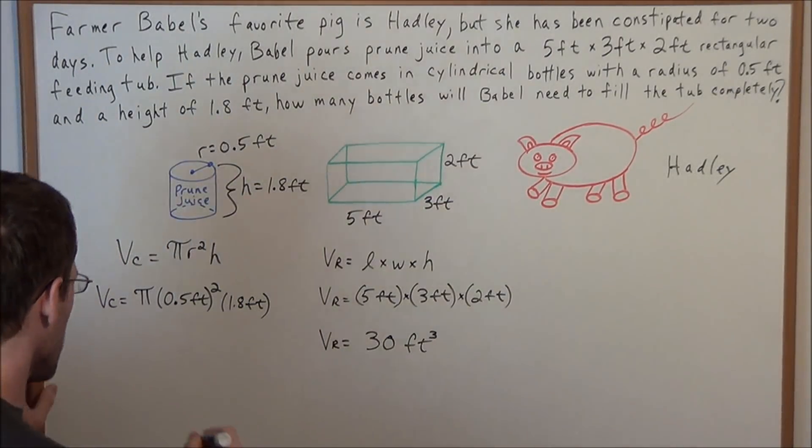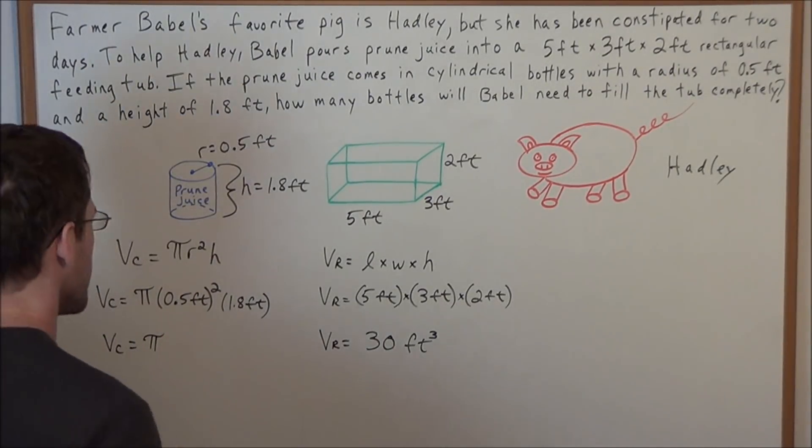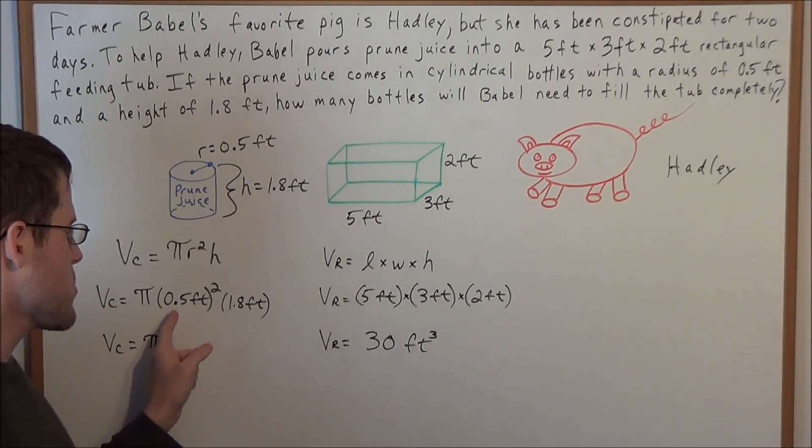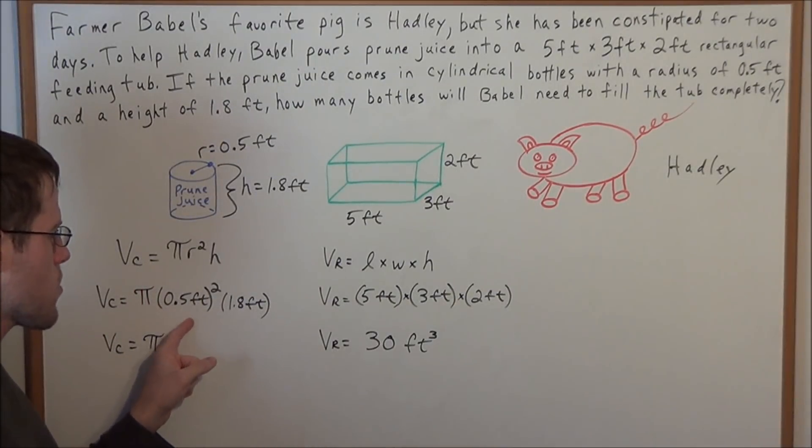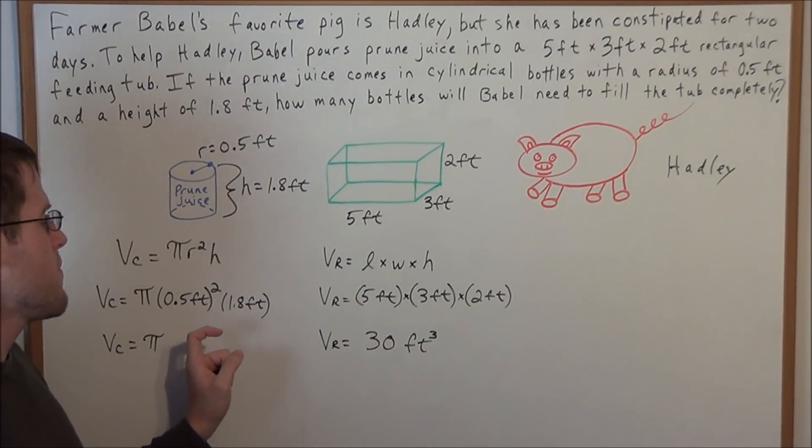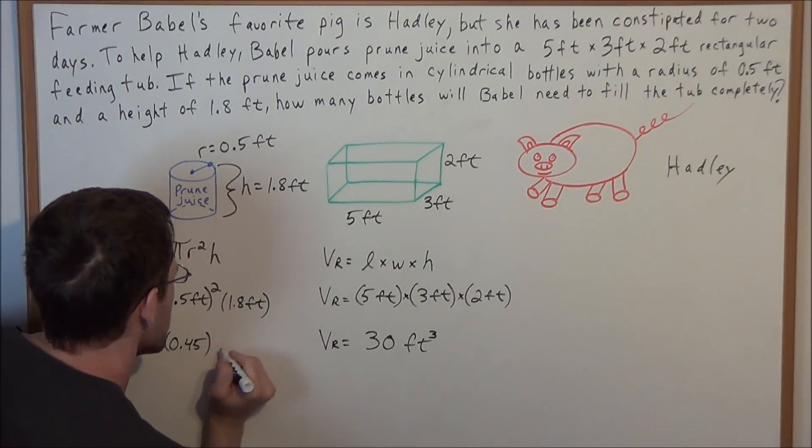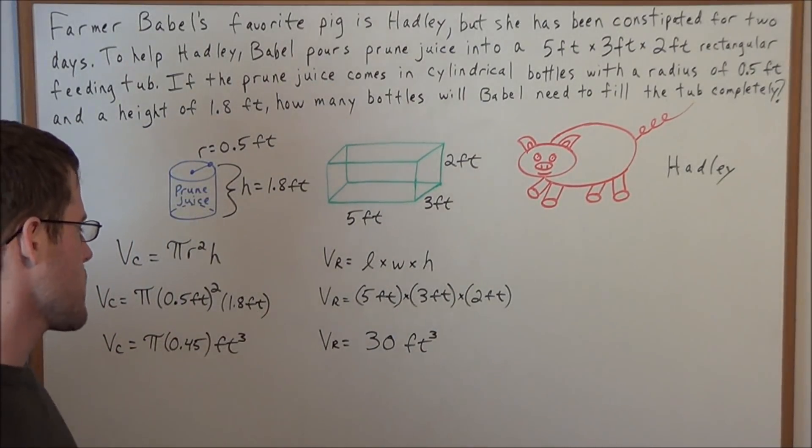So now when we work all of this out, we're going to have pi, and now 0.5 squared is 0.25, so we're going to have 0.25, and now feet times feet is feet to the second power. So we have 0.25 feet squared times 1.8 feet is going to give us 0.45, and remember this is all cubic feet, because we're going to have feet times feet times feet like this.